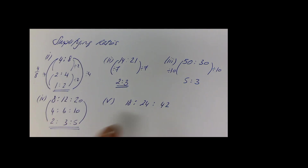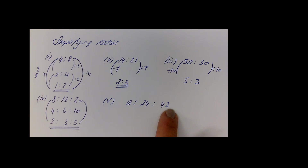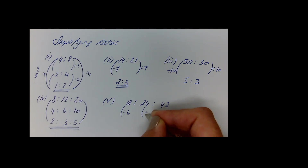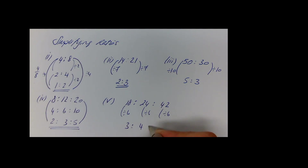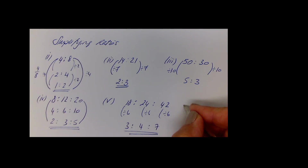For 18:24:42 — they are all in the six times table. So dividing everything by 6 gives 3:4:7, and that's the final answer.